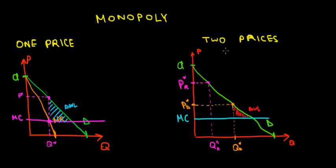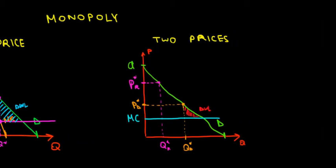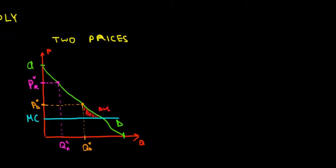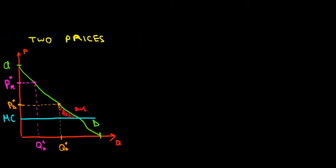Let's work on the math behind the two-price monopoly model. As a monopolist, we want to maximize profit in such a way that we charge optimal prices to consumers from the regular segment and the discount segment. This means we need to know our profit function and differentiate it with respect to every customer base.